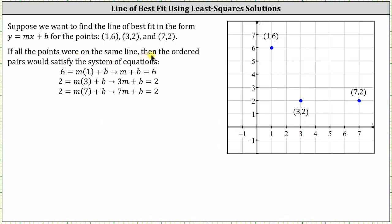If all the points were on the same line, the ordered pairs would all satisfy the equation y equals mx plus b, and we can form a system of equations. Using the ordered pair (1, 6), the first equation would be 6 equals m times 1 plus b. Using (3, 2), we get 2 equals 3m plus b, and using (7, 2), we get 2 equals 7m plus b. We can write these as m plus b equals 6, 3m plus b equals 2, and 7m plus b equals 2.